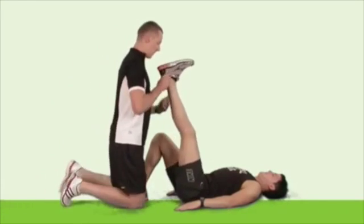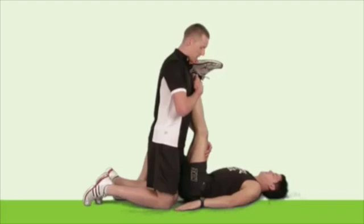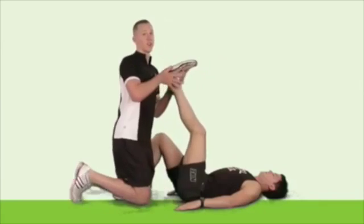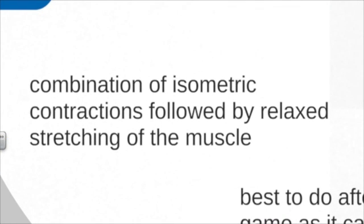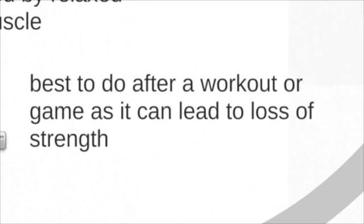The stretch is again taken to a point of mild discomfort by the partner and held for 10 to 20 seconds. This process can be repeated 2 to 3 times. It is a combination of isometric contractions — where the partner holds the stretch at a fixed point with no change in muscle length — followed by relaxed stretching. It's best to do PNF stretching after a workout or game, as the force involved can lead to some loss of muscle strength.